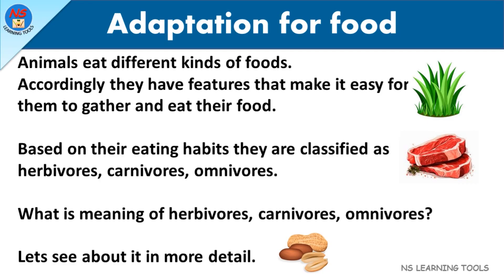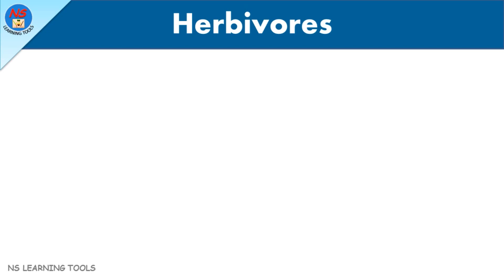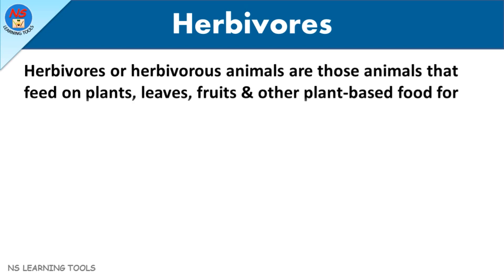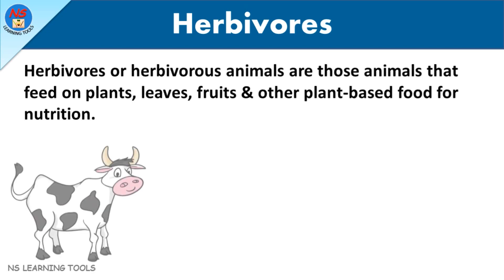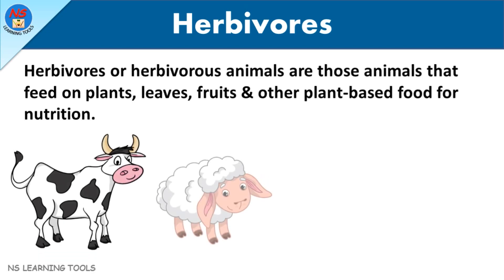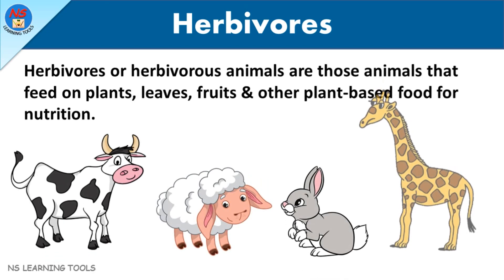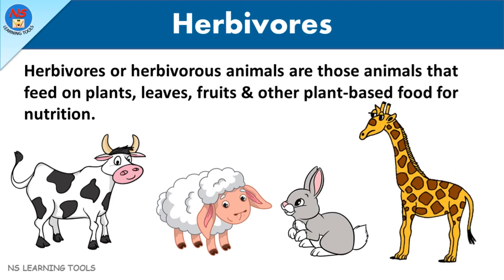Herbivores, or herbivorous animals, are those animals that feed on plants, leaves, fruits, and other plant-based food for nutrition. Here are a few examples of herbivorous animals.